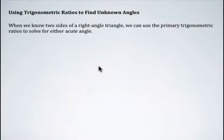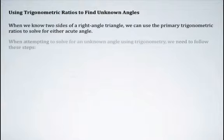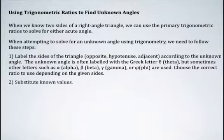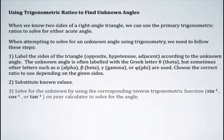So we can solve if we know two sides of a right angle triangle. We can use the primary trigonometric ratios to solve for either of the two acute angles in that triangle. These are the steps we're going to follow: First, identify for the angle we're looking for the opposite, hypotenuse, and adjacent side. Then substitute in our values and use our inverse trigonometric function—sine to the negative one, cosine to the negative one, or tangent to the negative one on our calculator to solve for the angle.